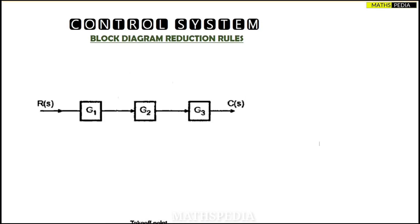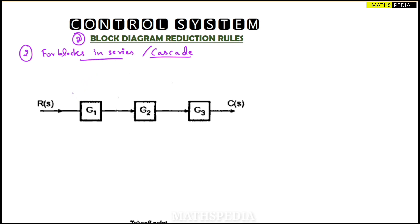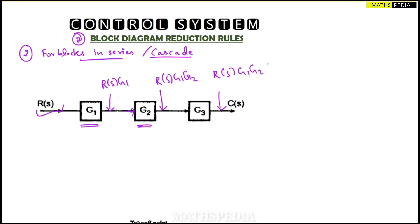In this video we'll be discussing control system block diagram reduction, loop number two. Here we have four blocks in series — series and cascade mean the same thing. The reference input R(s) goes into the first gain block G1, giving R(s)·G1. That result then goes into G2, giving R(s)·G1·G2, and then into G3, giving R(s)·G1·G2·G3.